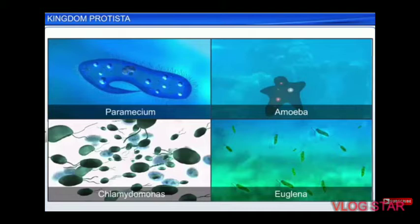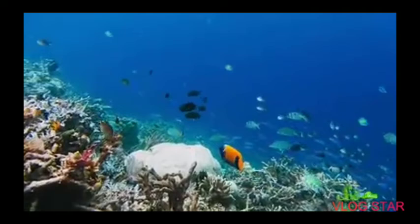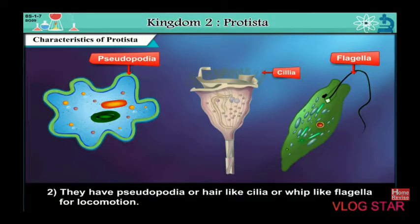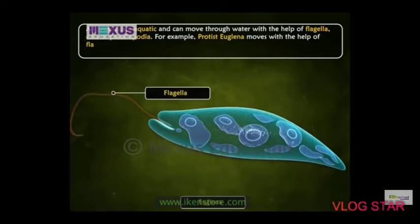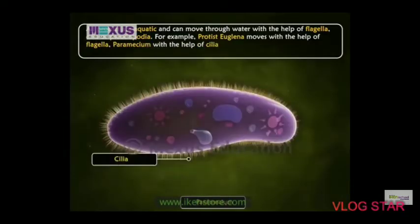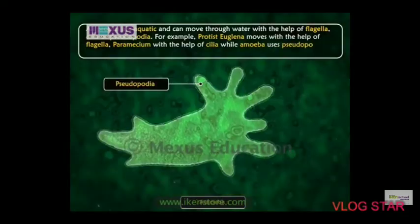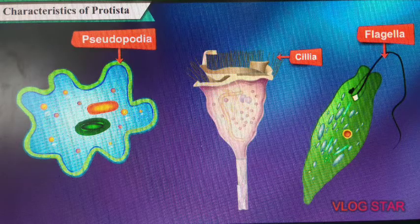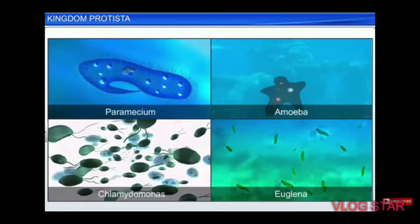Since all Protists are aquatic, they move through water with the help of flagella, pseudopodia, and cilia. For example, Euglena moves with the help of flagella, Paramecium moves with the help of cilia, and Amoeba uses pseudopodia — that is, false legs — for locomotion. So cilia, flagella, and pseudopodia are all organs for movement.